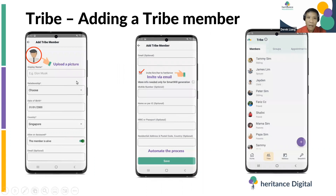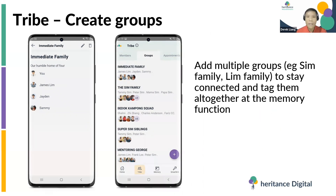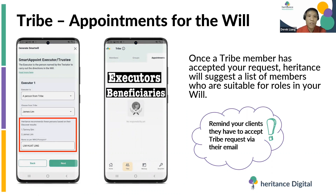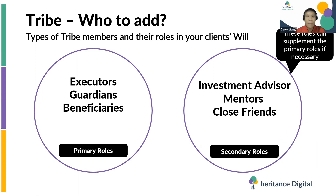You can add Tribe members, upload an avatar profile page by clicking on the avatar, and invite them to join your Tribe via the Heritons app — they will be notified over email. You can organize Tribe members into groups, similar to how we do it over WhatsApp or common conversation apps. You can also let them know if they are part of your will as appointment holders such as executor or beneficiaries, and they'll be notified when the time comes. You can choose the traditional primary roles of a will — executor, guardian, beneficiaries — or secondary roles like investment advisors, financial planner, mentors, and close friends.